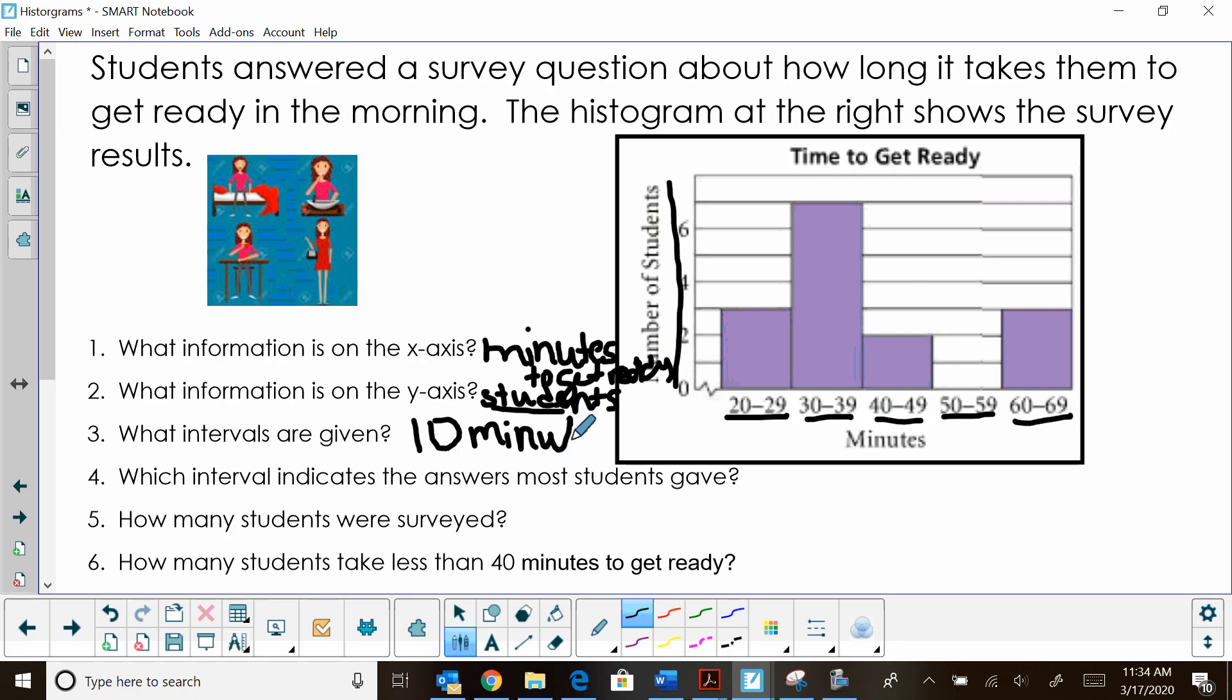Okay, which intervals indicate the answer most students gave? Okay, so we're looking for what's called the mode, which answer occurred the most? Well, that's easy because it is always the tallest bar in our histogram graph. So the 30 to 39 minute interval is our most occurring answer.